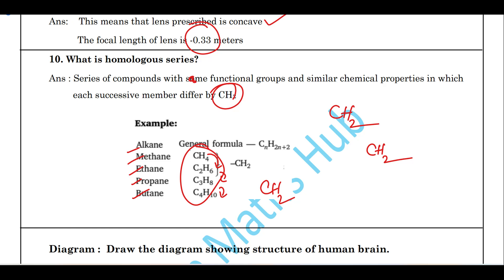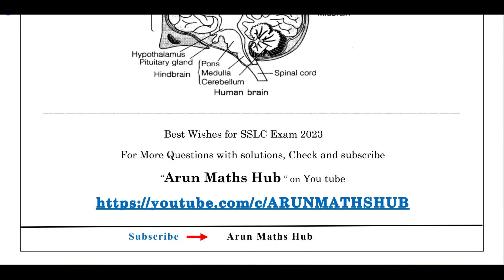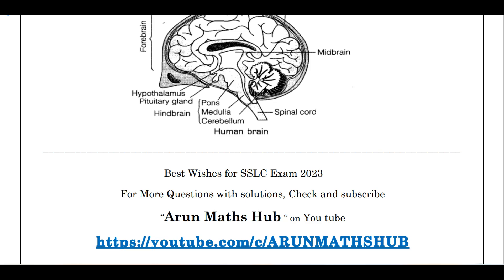An important diagram for four marks is the structure of the human brain. This diagram requires a little practice to draw neatly to get four out of four marks, and labeling is very important. This PDF will be shared in the telegram group — do join and share with your friends. Before the exams, we will try to cover as many questions as possible. Try to take a copy, read on the same day, write the test, correct yourself, and read the textbook. Definitely you can score good marks. Thank you for watching the video, do subscribe the channel.